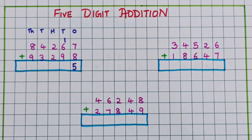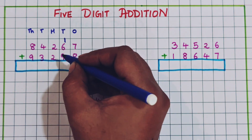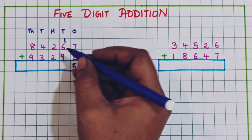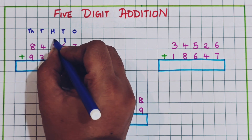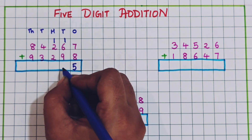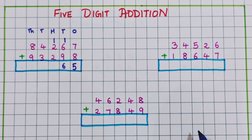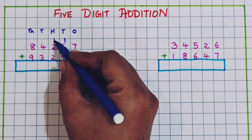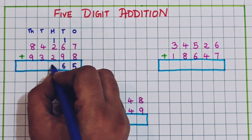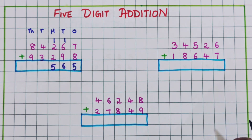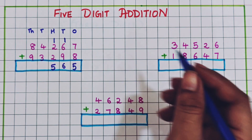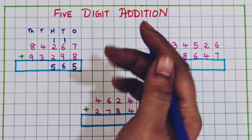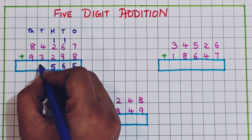Now 9 plus 1 is 10, plus 6 is 16 — write 1 and 6. Now 2 plus 2 is 4, plus 1 is 5. Now 4 plus 3 is 7, so we write 7.